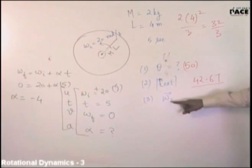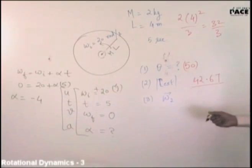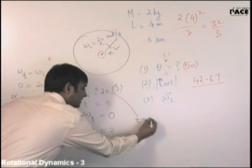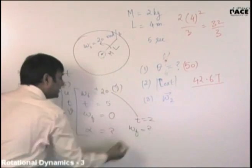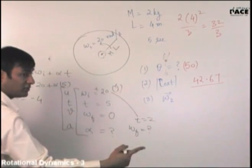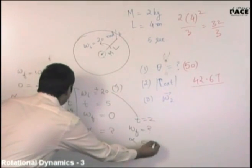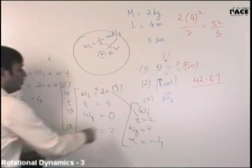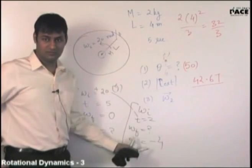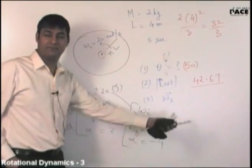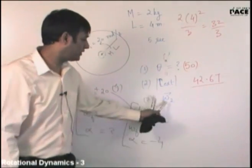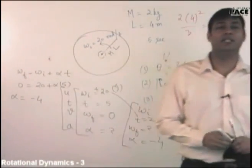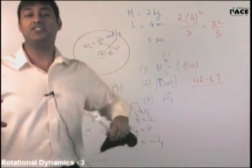Very good. To find omega after 2 seconds: I know omega initial equals 20, alpha equals minus 4, and time equals 2 seconds. Using v equals u plus at in rotational form: omega final equals omega initial plus alpha t. Substituting gives omega at 2 seconds. These kinds of questions — where you are given the motion and not asked to find the cause of motion — are called rotational kinematics.